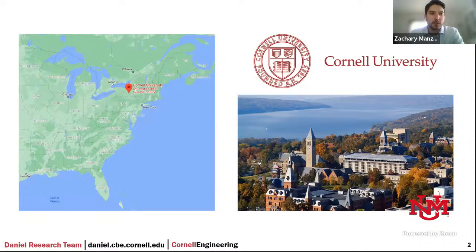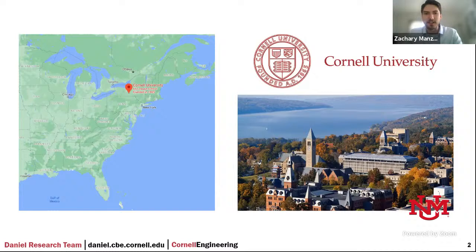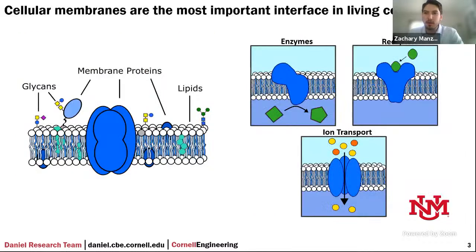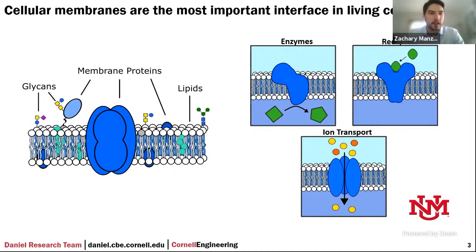Before I get started, I want to orient you: we're at Cornell University in Ithaca, New York — a really beautiful place. When thinking about the important components in cells, one of the most important features is the interface of the membrane. In bacterial cells it's the outer membrane; in eukaryotic cells, the plasma membrane and organelles. These membranes are a really critical interface in maintaining interactions and cellular viability. They have immense complexity: glycans added to lipids or membrane proteins, lipids with hydrophobic interiors and hydrophilic head groups.